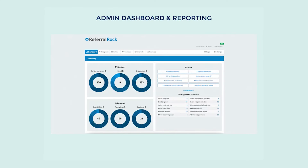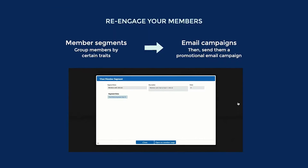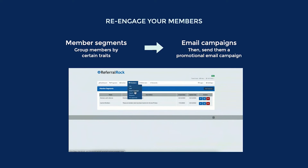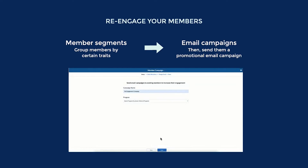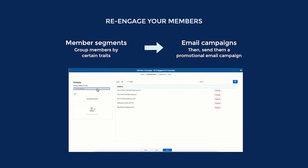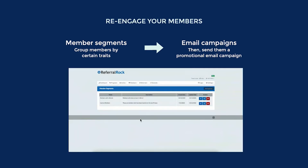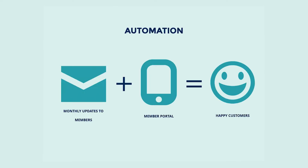Now, while these numbers are vital, they don't tell the whole story. Diving deeper into your members' profiles will actually allow you to identify which sharing options are the most effective, who your top earners are, and even how their referrals are interacting with your brand prior to even becoming a referral. As an admin, you won't just have access to all of these numbers — you'll also be able to use them to make educated decisions on how to further engage with your members and boost program participation. By using our member segments feature, you will group members together by certain traits and then target them with special messaging through member email campaigns.